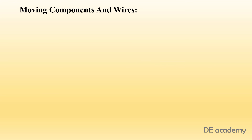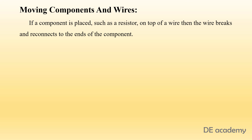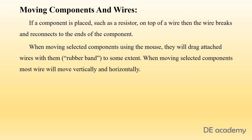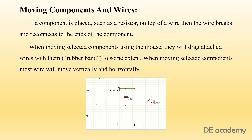Now, about moving components and wires — if a resistor, capacitor, or any component is placed on top of a wire, the wire breaks and reconnects to the ends of the component. While moving selected components, they will drag the attached wires with them to some extent, technically known as rubber banding. Using arrow keys, rubber banding of wire can be excluded. If a wire is selected by clicking on it, green grab handles will appear at the ends and vertices as shown in the figure.